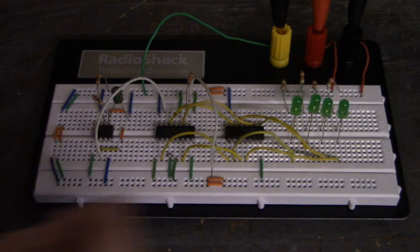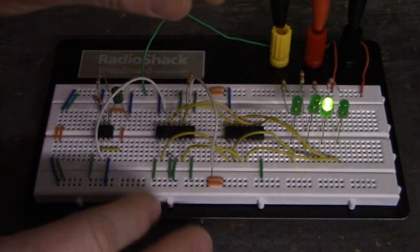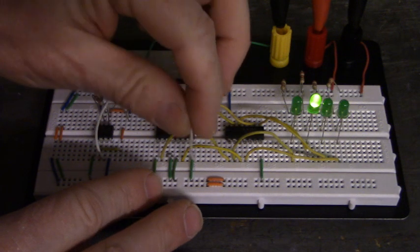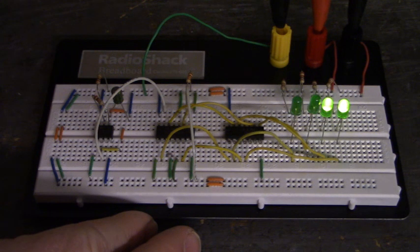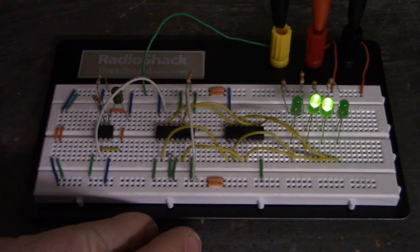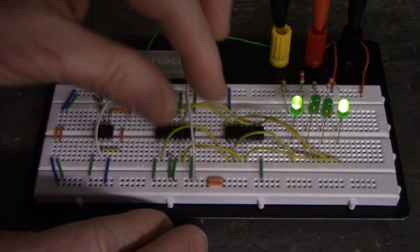Let's go ahead and close our switch to ground. This is our up down counter. 0, 9, 8, 7, 6, 5, 4, 3, 2, 1, 0, 9, 8, 7, 6, 5, 4, 3, 2, 1, 0. Let's go back up.